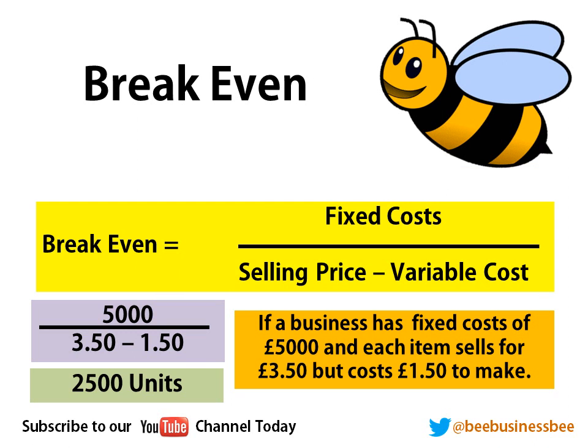So what is the formula for break-even? This is a formula that you need to be able to use. It's simply fixed cost divided by the selling price minus the variable cost. And that's how you calculate break-even. It's the fixed cost in total and the selling price per unit and the variable cost per unit. So let's look at an example and plug some numbers in. If a business has a fixed cost of £5,000 and each item it sells at £3.50 but it costs them £1.50 to make, let's plug those numbers in and work out the break-even.